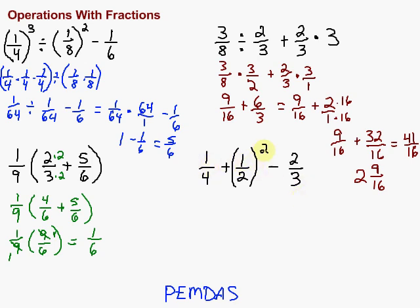Alright, let's take a look at this last one. In this case, we have an exponent here. And then we've got some addition and subtraction. So we need to do the exponent first. So one-half squared. Remember, squaring a number is just times itself. So one-half times one-half. That would be one-fourth. So one-fourth plus one-fourth minus two-thirds.